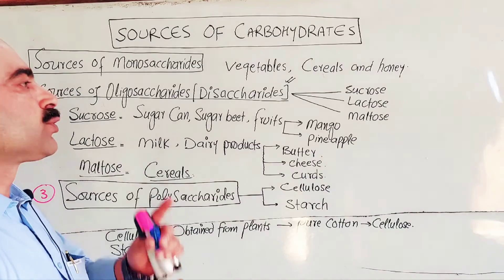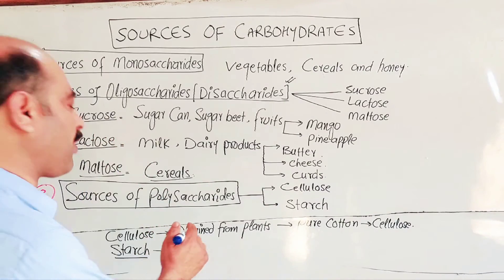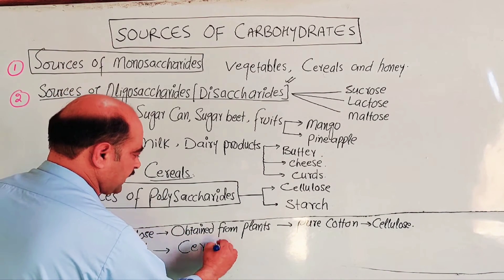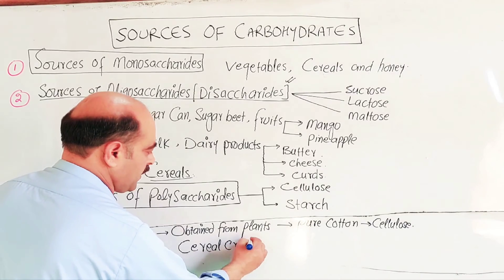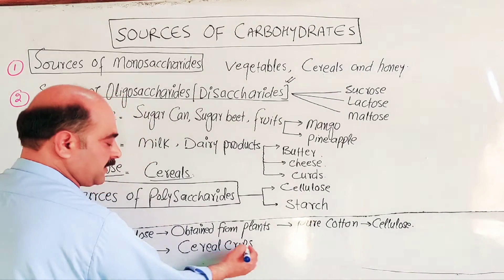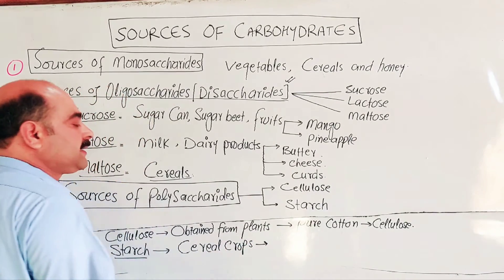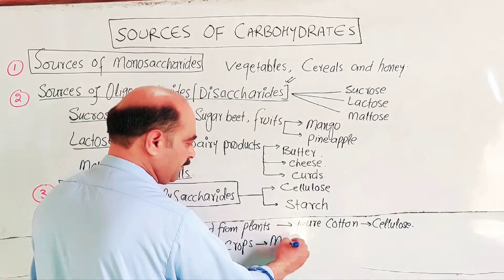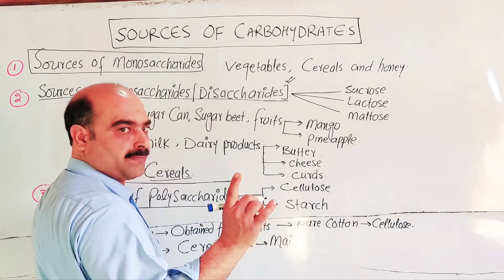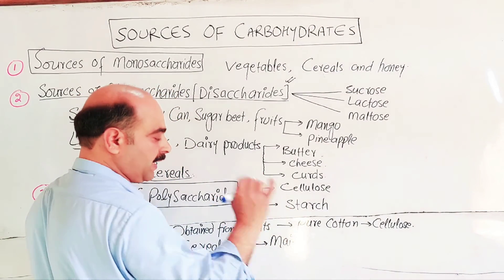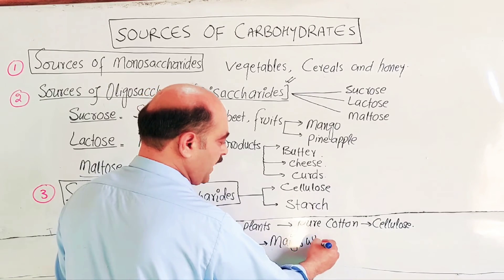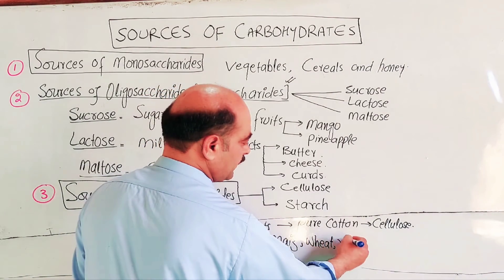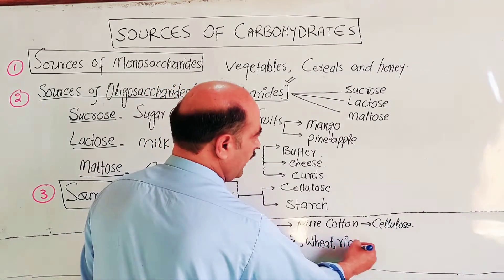Starch is found in seeds and cereal crops. These cereal crops include wheat, rice, maize, barley, and other grains. These are the main plant sources where carbohydrates are stored in the form of starch.